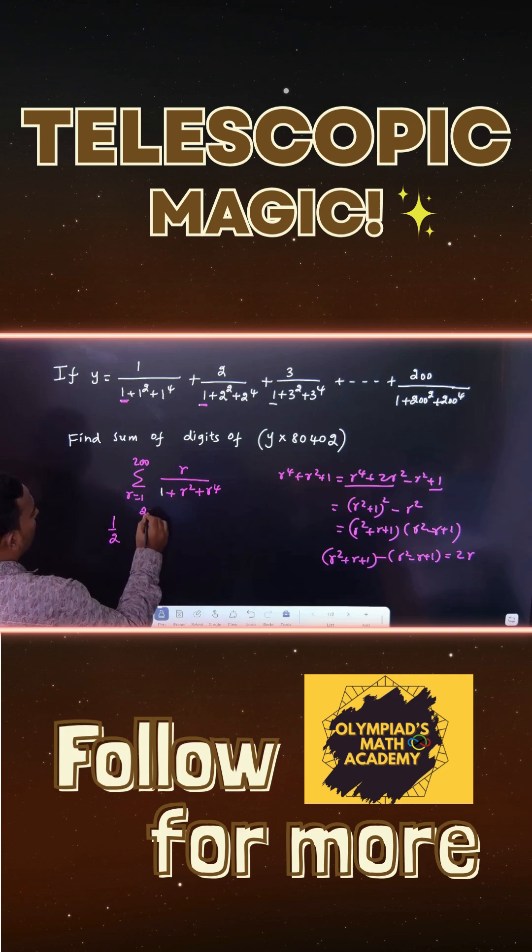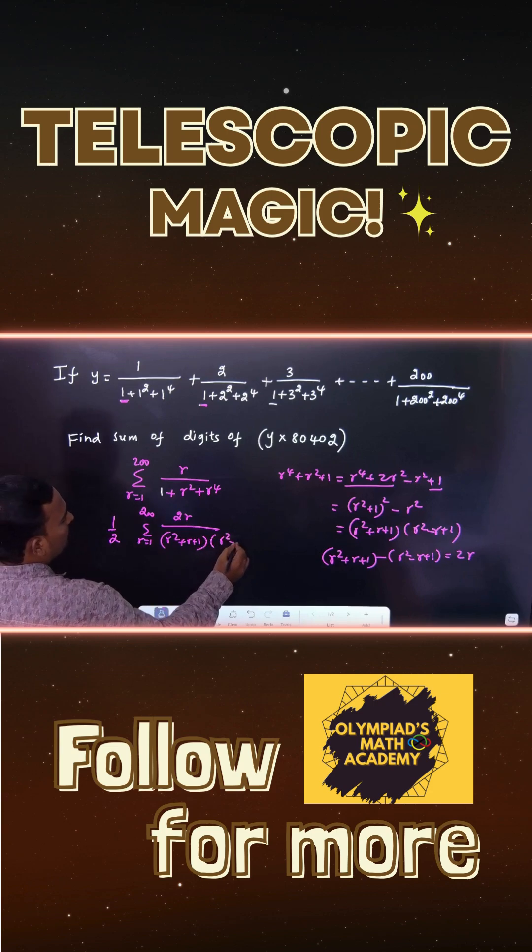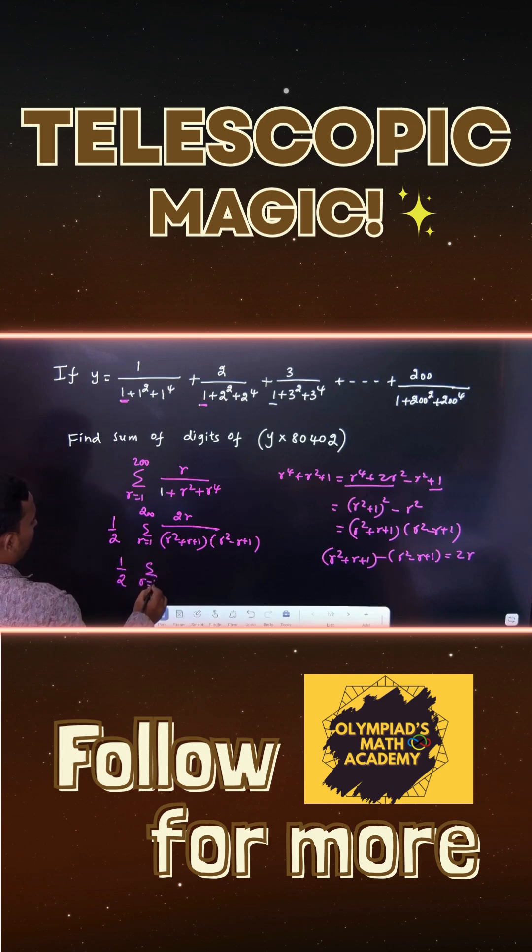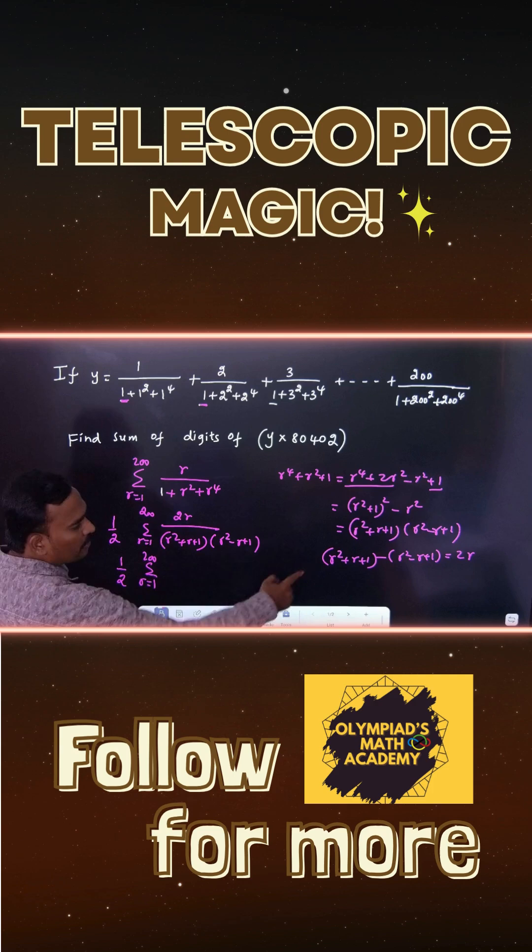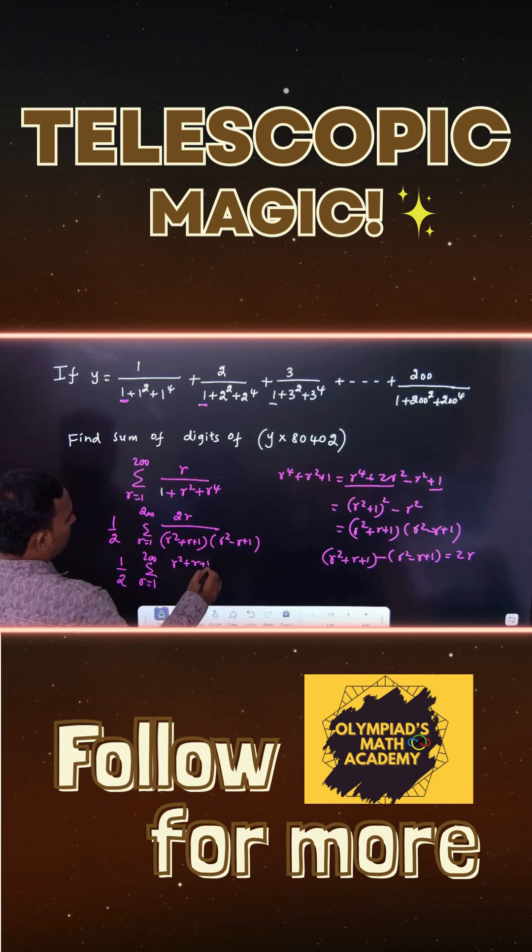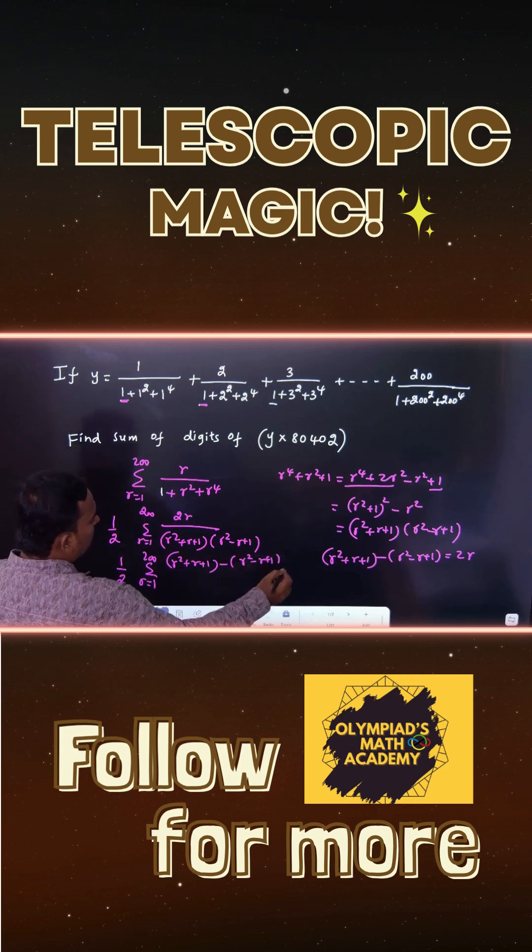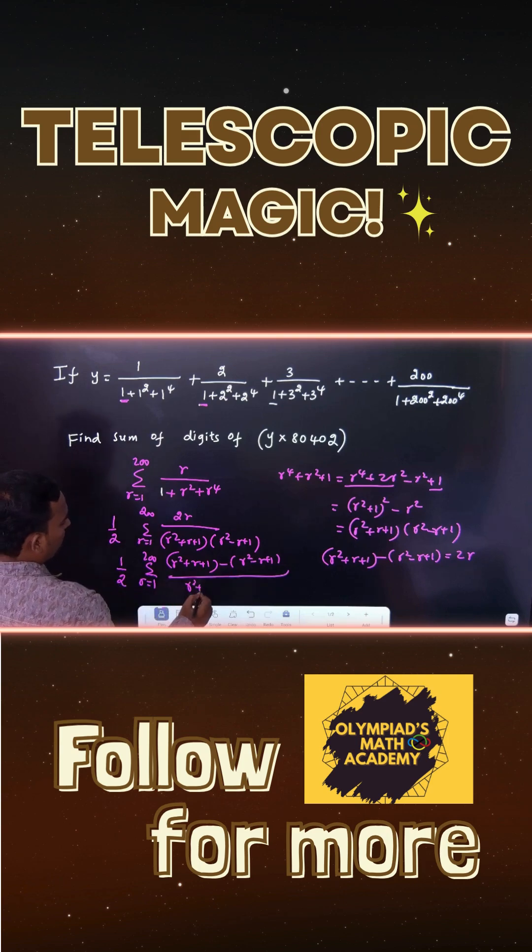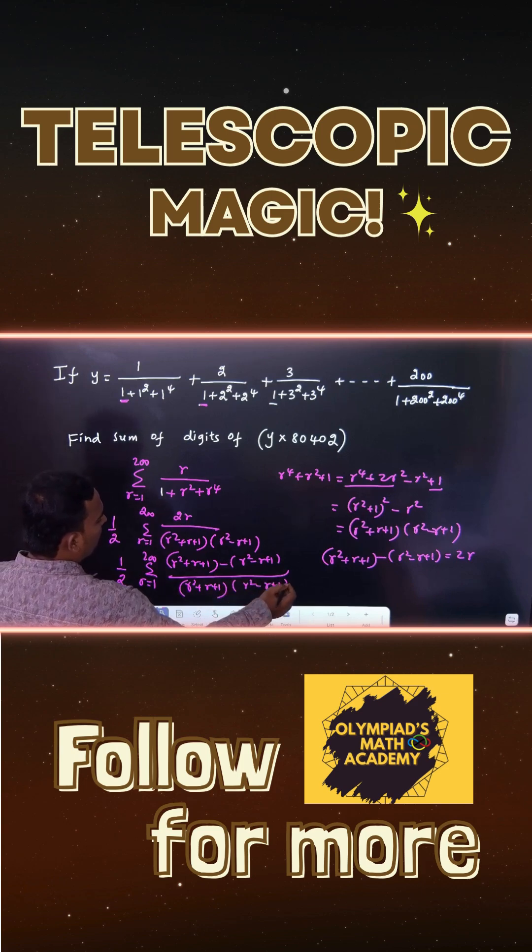Summation r varies from 1 to 200, 2r divided by (r squared plus r plus 1) times (r squared minus r plus 1), we can write. So, 1 by 2 times, r varies from 1 to 200. 2r, how to replace? Just take the difference of this: r squared plus r plus 1 minus r squared minus r plus 1, divided by (r squared plus r plus 1) times (r squared minus r plus 1), we can write.